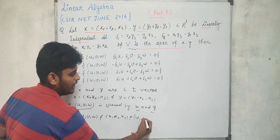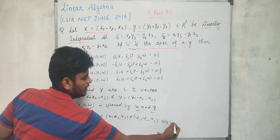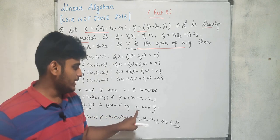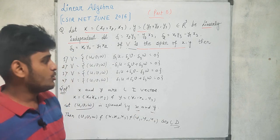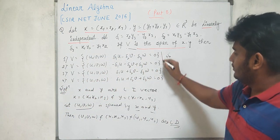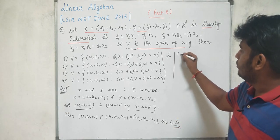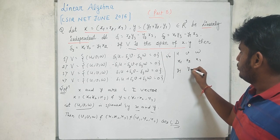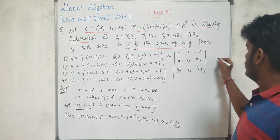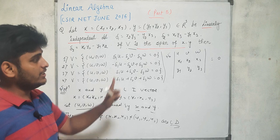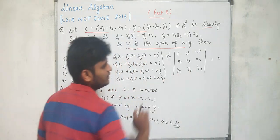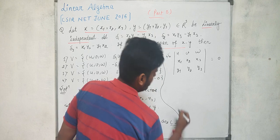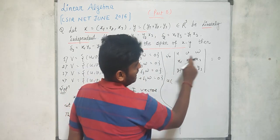The three vectors (U, V, W), (X1, X2, X3), and (Y1, Y2, Y3) are linearly dependent, because (U, V, W) is generated by the other two. So the determinant with rows (U, V, W), (X1, X2, X3), (Y1, Y2, Y3) equals zero. We expand this determinant by row one.